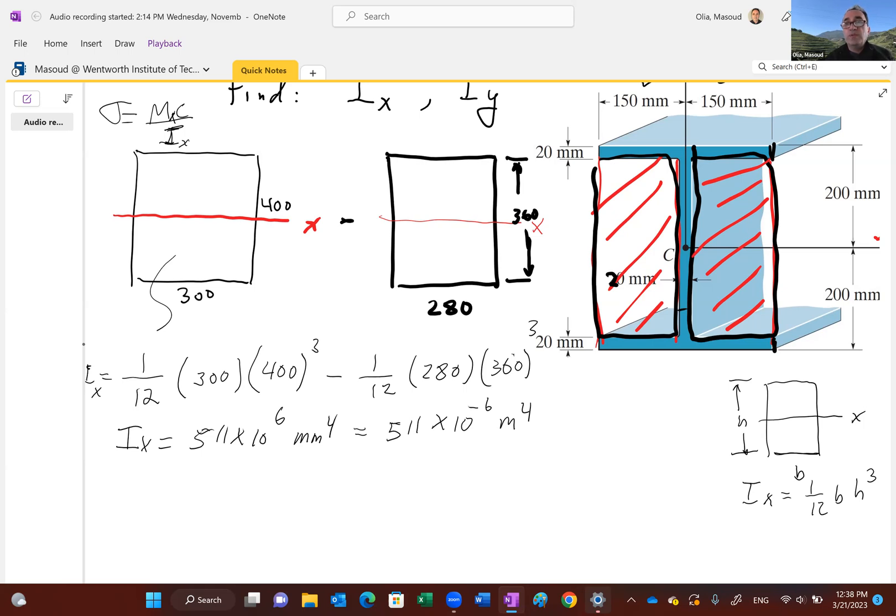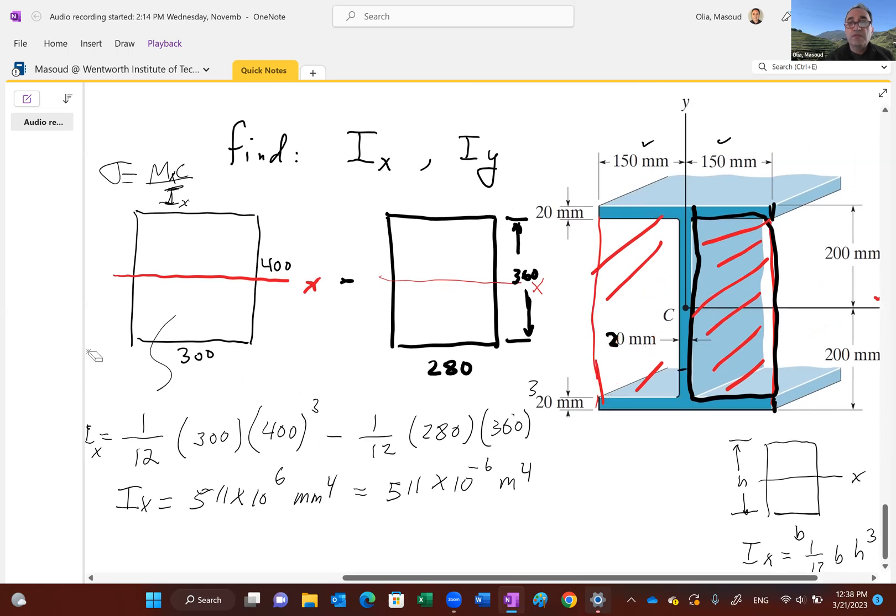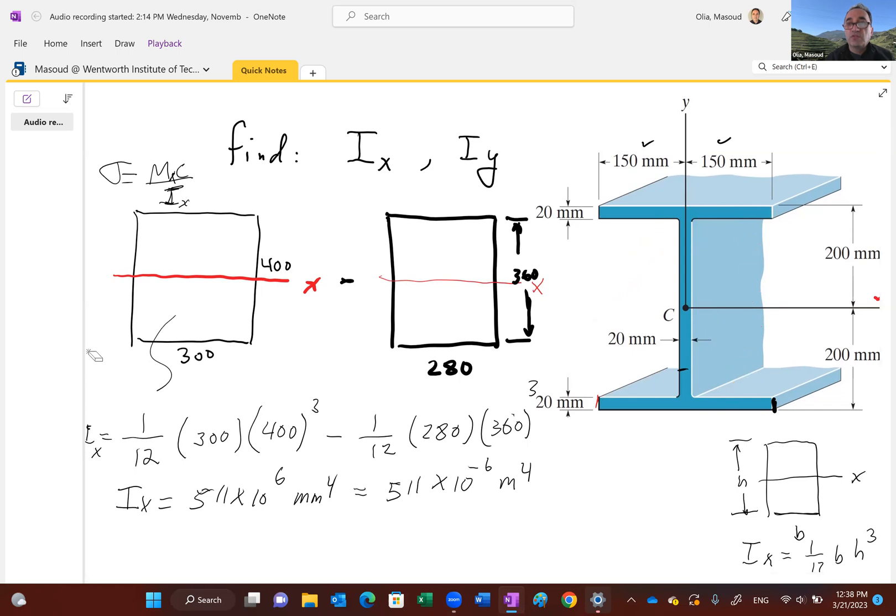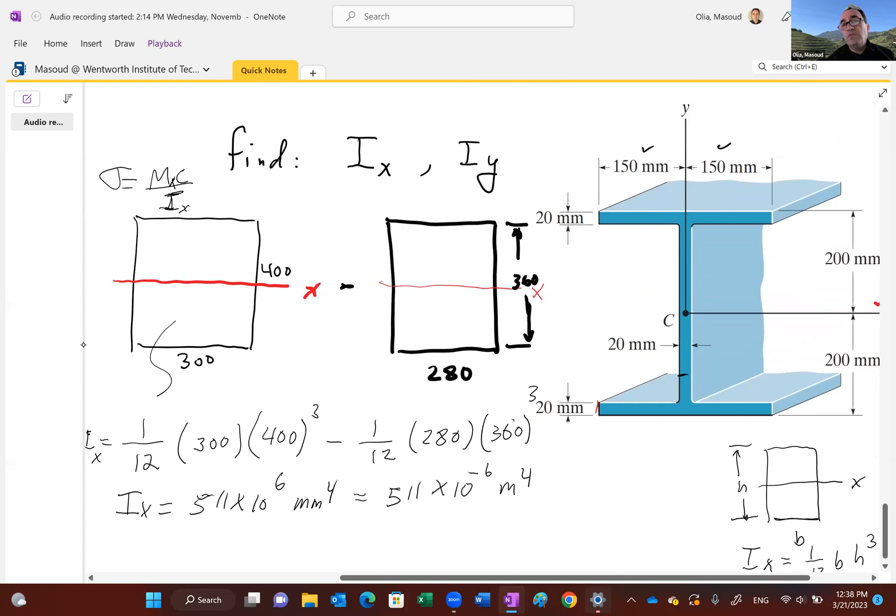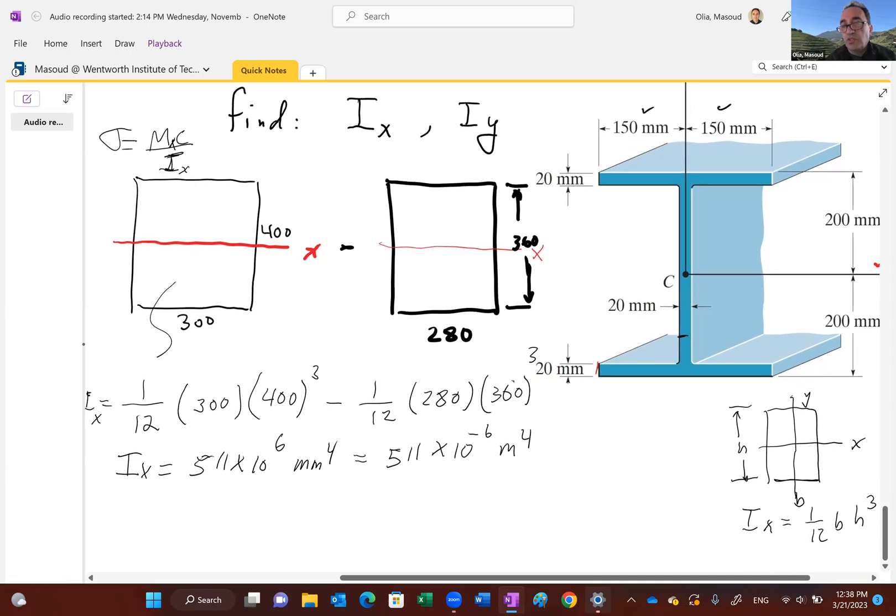All right, what about I with respect to y-axis now? Let me go ahead and erase this. Let's see, you've seen how we handle that situation, right? What about I with respect to y-axis? See, I with respect to y-axis, basically, you see here, if I put y-axis, b and h will switch. So you don't even really need a formula.